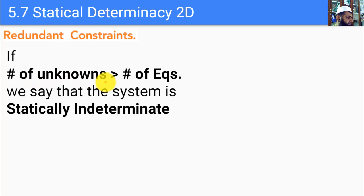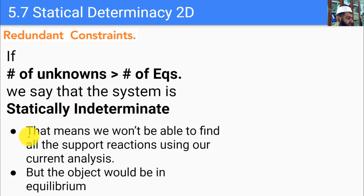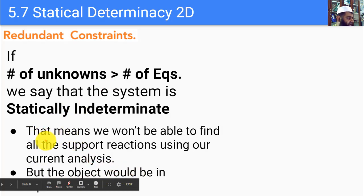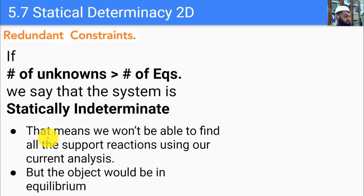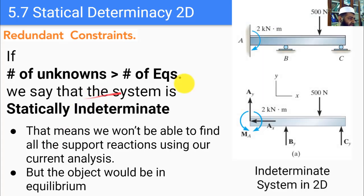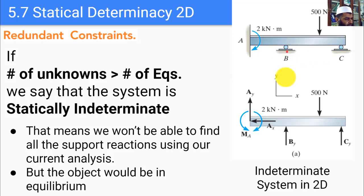The object can still be in equilibrium, but we won't be able to find all the support reactions using the analysis studied so far. For example, here we have a beam with three supports: a fixed support at A which generates two forces and one couple moment, and two roller supports at B and C each providing a vertically upward force — giving five unknowns total.